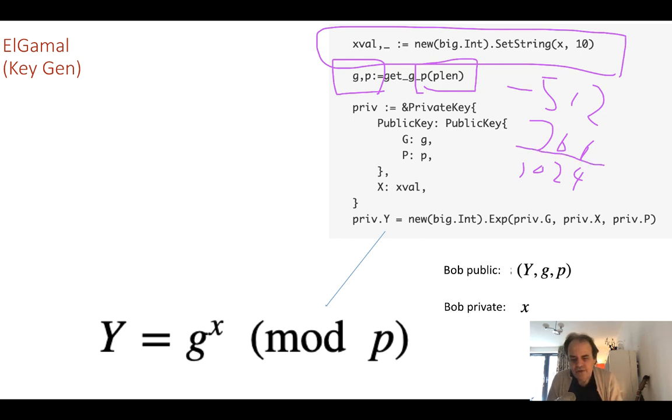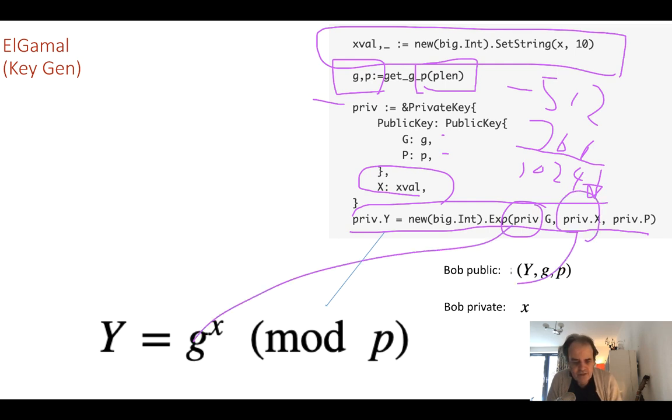Roughly the security needs to be more than 768, probably looking at 1024 or 2048. We then create our private key which is G, P, and X value. From here we can create the Y value which is G to the power of X mod P. That will give us our value of Y.